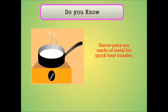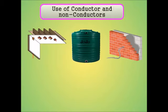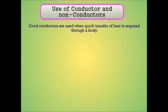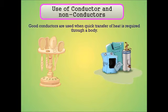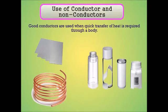Saucepans aise metal se banaye jate hain jo quick heat transfer karti hai. Hot water tanks, wall cavities, room ceilings, and double-glazed windows ko different types of filling ke sath insulate kiya jata hai. Good conductors tab use kiye jate hain jab quick heat transfer karna ho. Cooking utensils se lekar different appliances mein use hote hain, jaise aluminum ya copper ko condenser of refrigerator mein ya metal box ko ice cream banane mein.